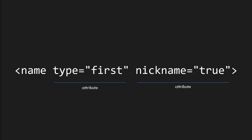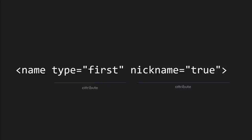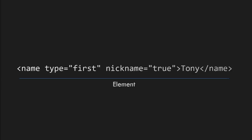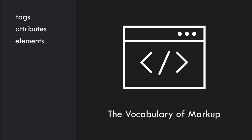This entire block - the tags with the attributes and its contents - is called an element. And here we have the vocabulary of markup: tags, attributes, and elements. So add that in along with the vocabulary of trees, and now we're really getting into the details and speaking like an HTML author.